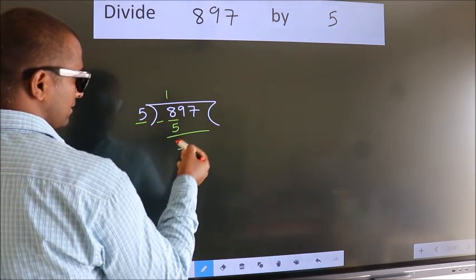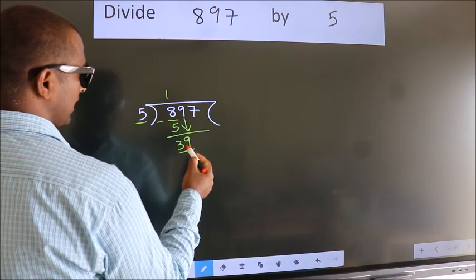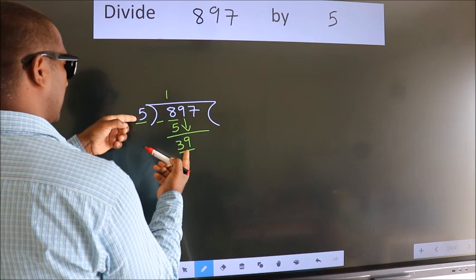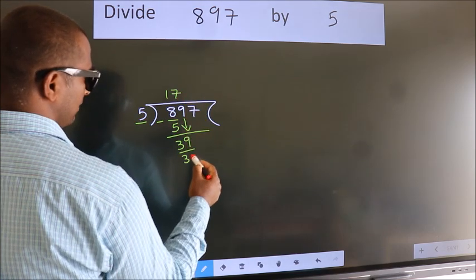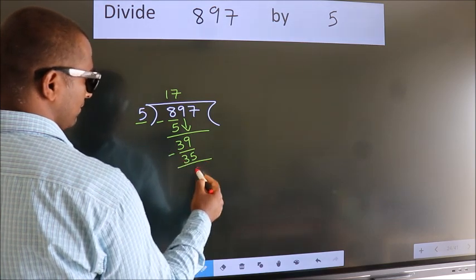After this, bring down the beside number. So 9 down, making 39. A number close to 39 in the 5 table is 5 sevens, which is 35. Now we subtract. We get 4.